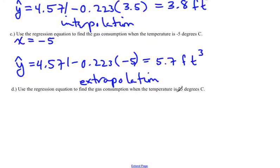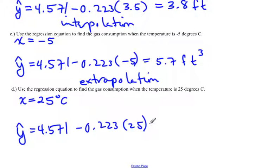This time we want to find the gas consumed when the temperature is 25 degrees. This is degrees Celsius. Y hat would be 4.571 minus 0.223 times 25. That comes out to be roughly negative 1.0 cubic feet. We can have a negative temperature like we did here because it's degrees Celsius and it's a negative value. But you can't have a negative gas consumed. That would mean that you're actually putting gas back into the system.